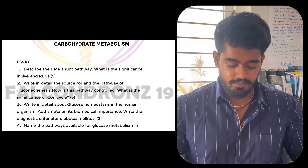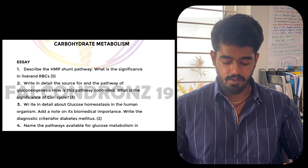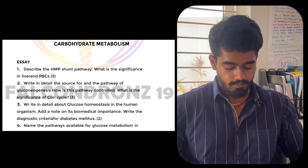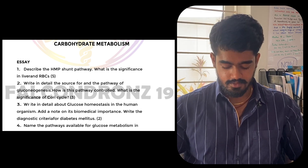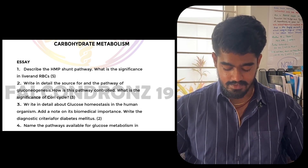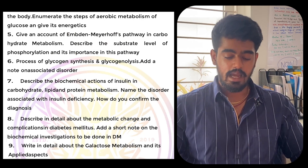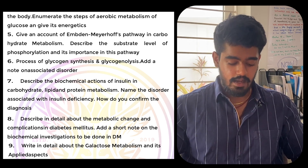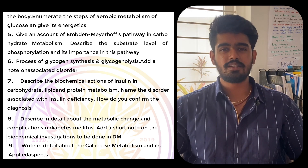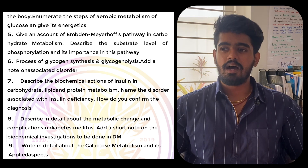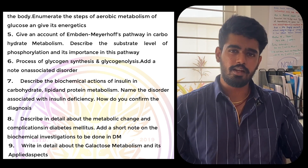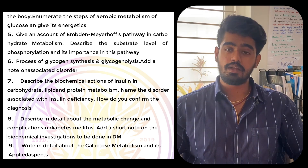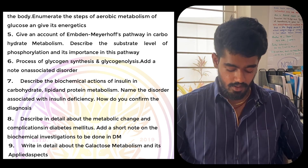For carbohydrate metabolism, the most important questions are: HMP shunt pathway and its significance in RBC — a very good question — gluconeogenesis, glucose homeostasis, glucose metabolism, Embden-Meyerhof pathway, insulin, diabetes mellitus, and galactose metabolism. For short notes, you have to study all the storage disorders — those are very important. Most questions will be covered in the essays.